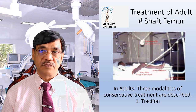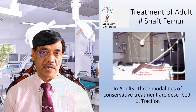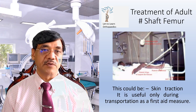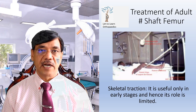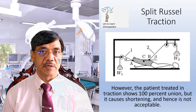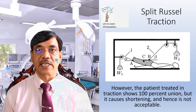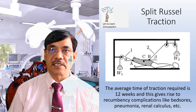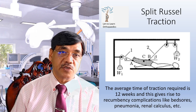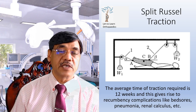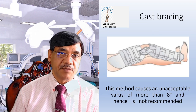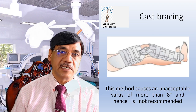In case of adults, three modalities exist. Conservative treatment by traction: skin traction is useful only during transportation as a first aid measure. Skeletal traction is useful only in early stages and its role is limited. A patient treated with traction shows 100% union, but it causes shortening and is not acceptable nowadays. The average time for traction required is 12 weeks, causing recumbency complications such as bedsores, pneumonia, or renal calculi. This method also causes unacceptable varus of more than 8 degrees and is not recommended nowadays.